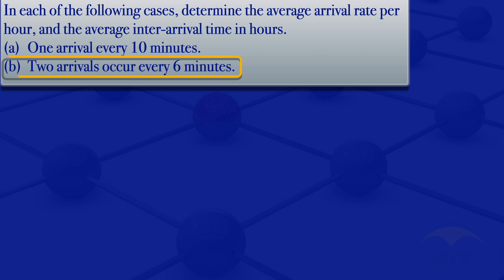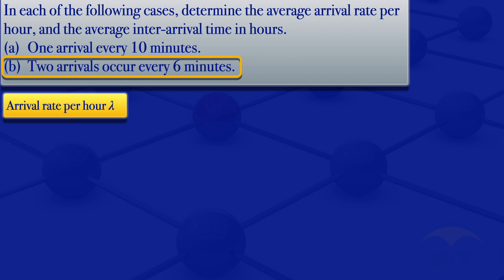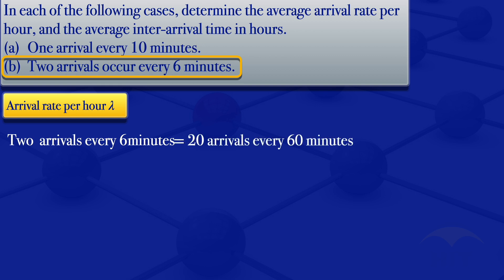Moving on to the next one: 2 arrivals occurring every 6 minutes. I'll first find the arrival rate per hour, lambda. We are given 2 arrivals every 6 minutes and want the arrival rate per hour. We multiply 6 minutes by 10 to get 60 minutes. For 60 minutes, we have 2 times 10, which gives us 20 arrivals. So 2 arrivals every 6 minutes is equivalent to 20 arrivals every 60 minutes.